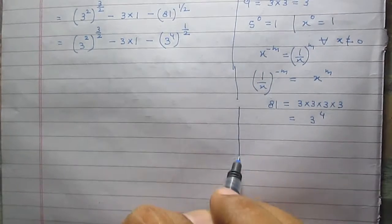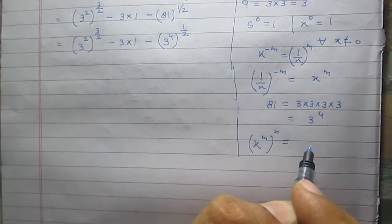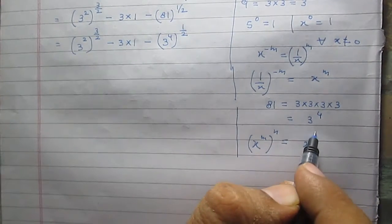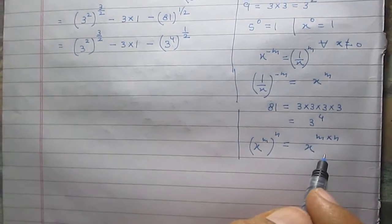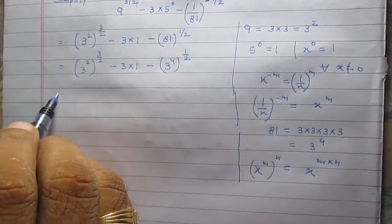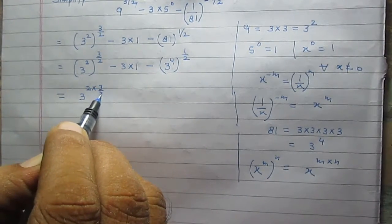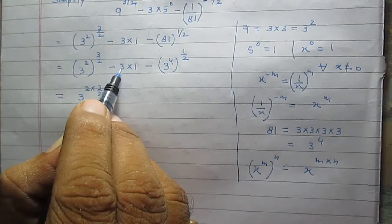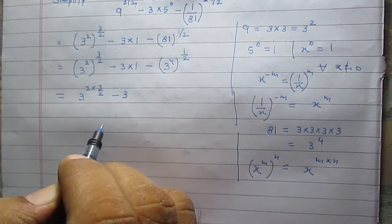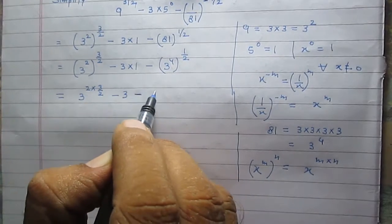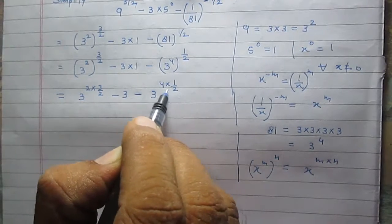According to the laws of exponents, x raised to the power m raised to the power n is equal to x raised to the power m times n. Using this rule, we simplify to 3 raised to the power 2 multiplied by 3 by 2, then minus 3 multiplied by 1, which is minus 3 itself, and then 3 raised to the power 4 in multiplication with 1 by 2.